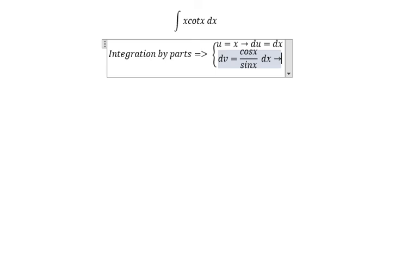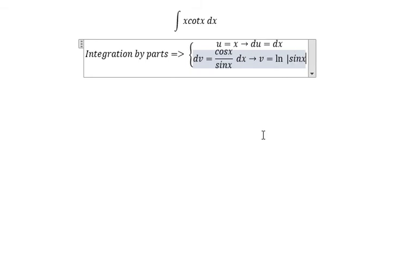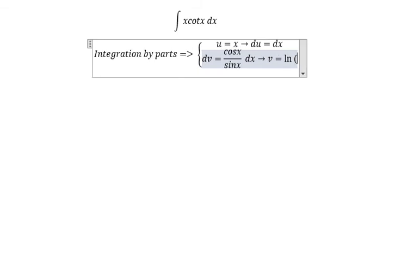We know that the integral of cosine s over sine s you will get v equal to ln of absolute value of sine s, but in this situation we just use the bracket.